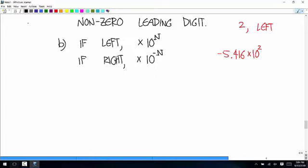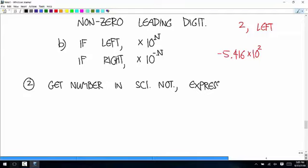So that's going from standard to scientific. We also need to be able to go from scientific to standard. So the second thing we need to be able to do is get a number in scientific notation and express it in standard notation. And for this one the example I'm going to use is 6.52 times 10 to the negative fourth.